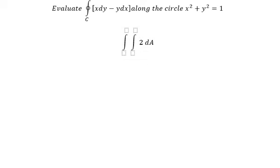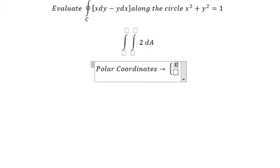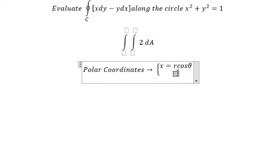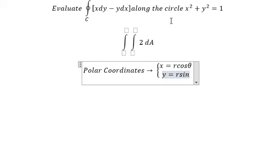Next we need to use polar coordinates. So we have x equals to r cosine theta, y equals to r sine theta.